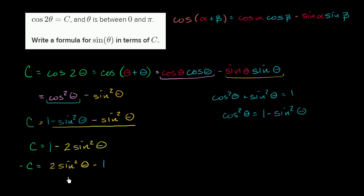And then, let's see, I could add 1 to both sides. If I add 1 to both sides, I get 1 minus c is equal to 2 sine squared theta.